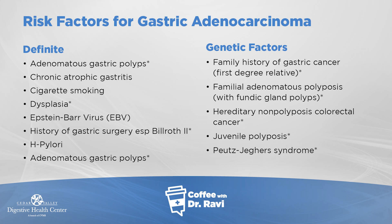There's a condition called atrophic gastritis where the lining of the stomach, because of immune activity, grows thin — it goes through a series of changes and puts you at risk. It can also cause B12 deficiency. Cigarette smoking is a risk factor. Prior Epstein-Barr virus infection is also a risk factor.